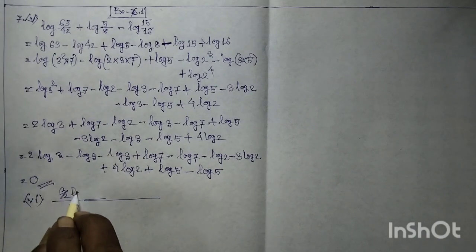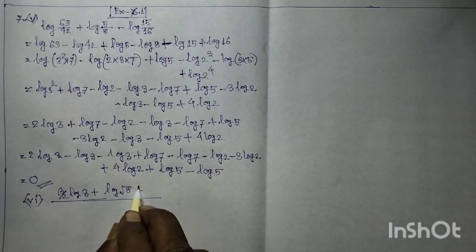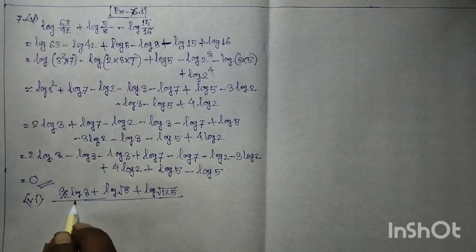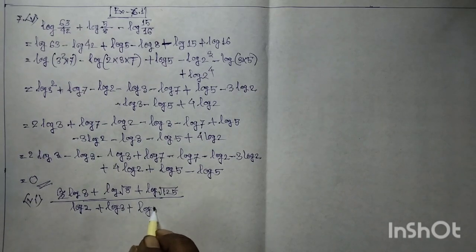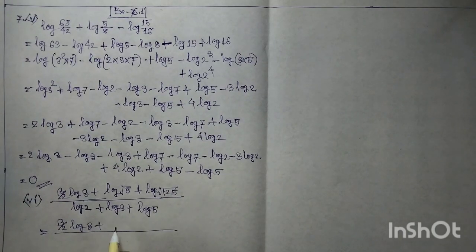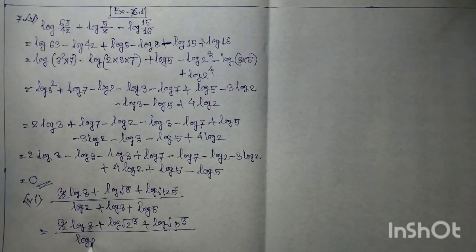Question 76: (3/2)·log 3 plus log√8 plus log∛125, all divided by log 2 plus log 3 plus log 5, is equal to zero. Rewrite as: log 3 plus log(2^(3/2)) plus log(5^(1/3)) divided by log 2 plus log 3 plus log 5.